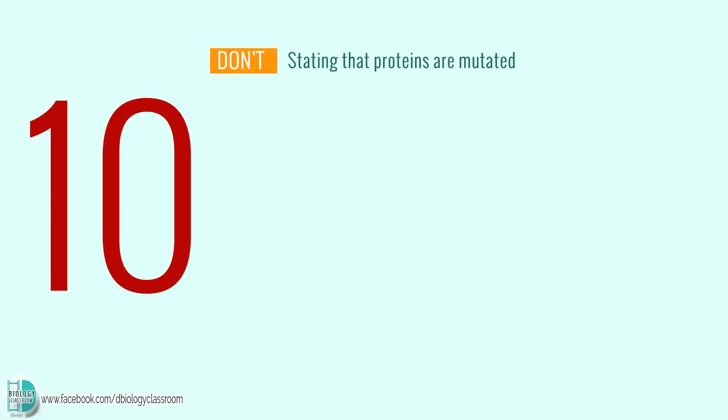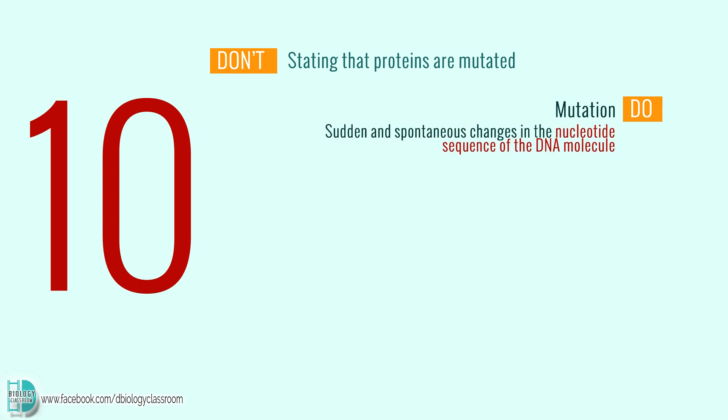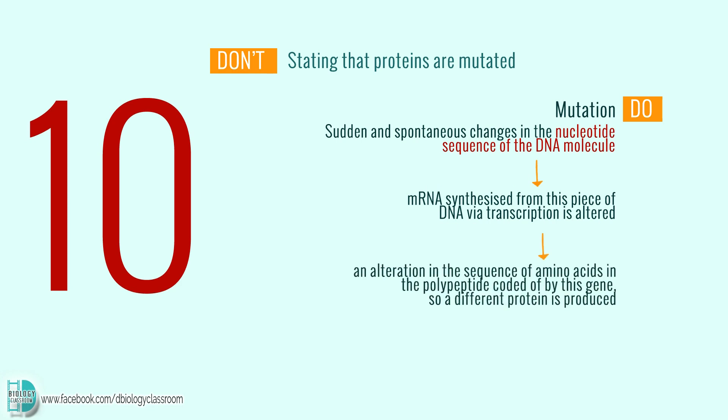Number 10: Stating that proteins are mutated. Mutation is defined as the sudden and spontaneous changes in the nucleotide sequence of the DNA molecule. As a result, the mRNA synthesized from this piece of DNA via transcription is altered, followed by an alteration in the sequence of amino acids in the polypeptide coded for by this gene. Hence, a different protein is produced. So it is the DNA that is mutated, but not the protein.